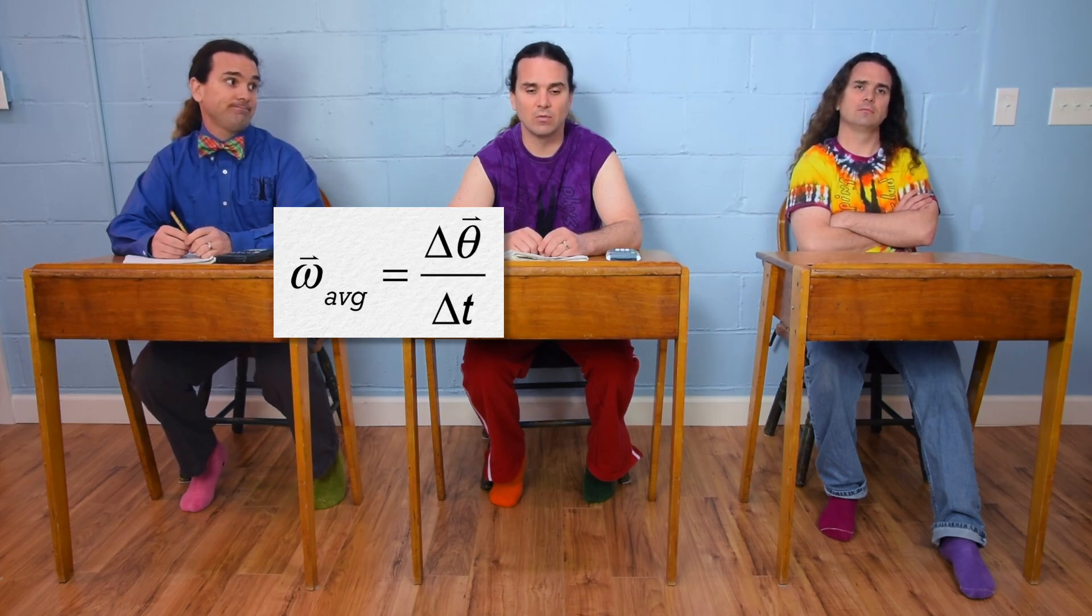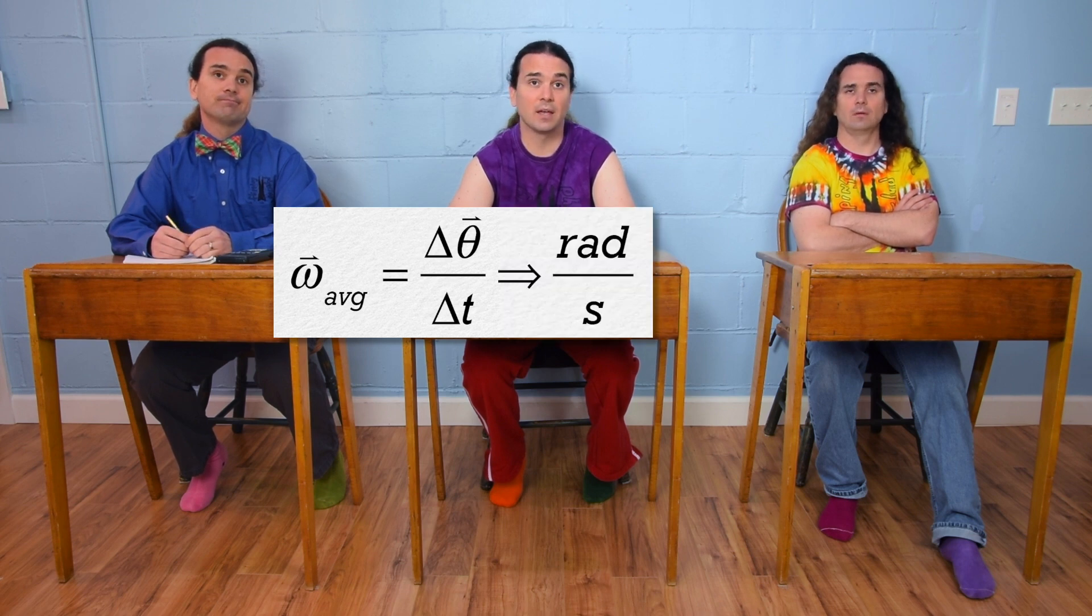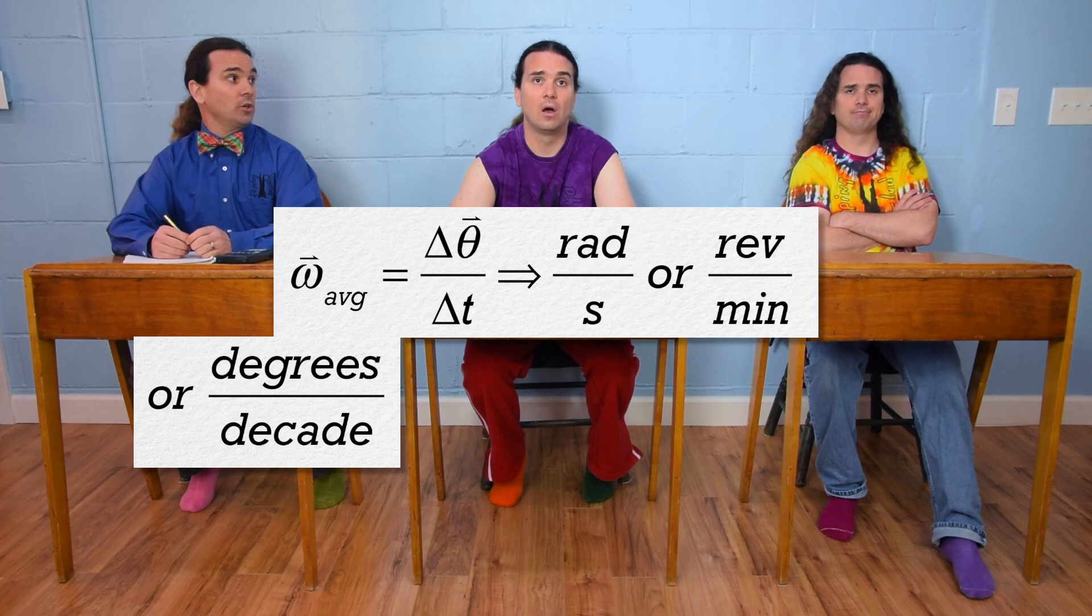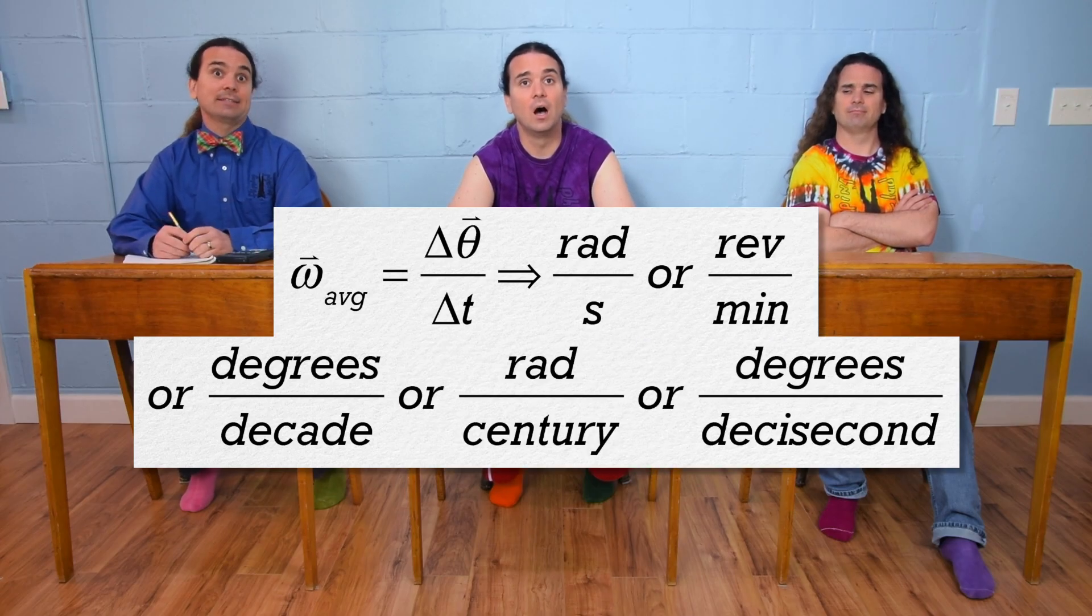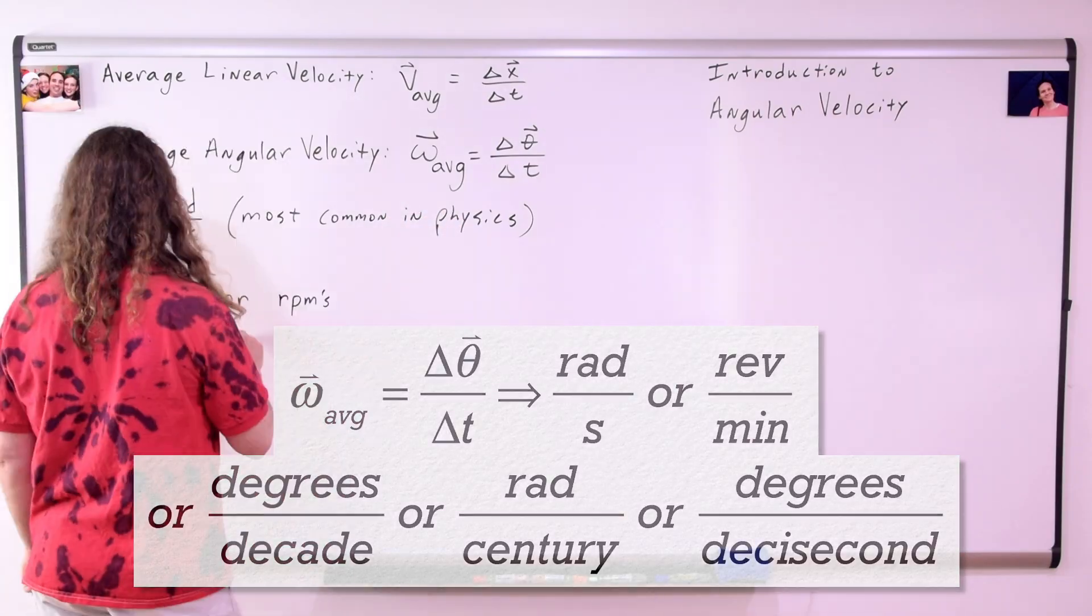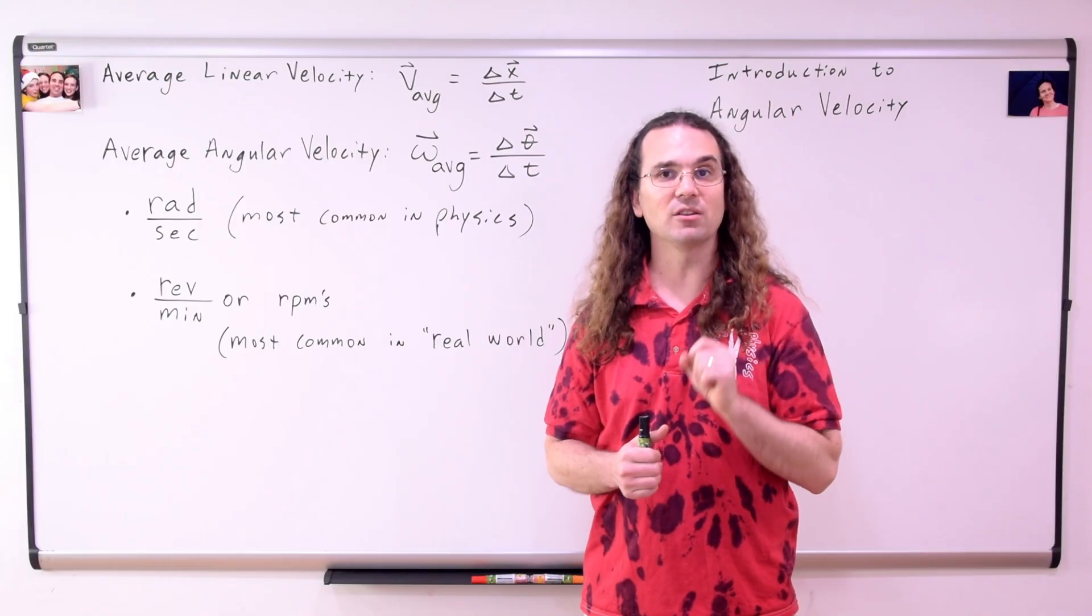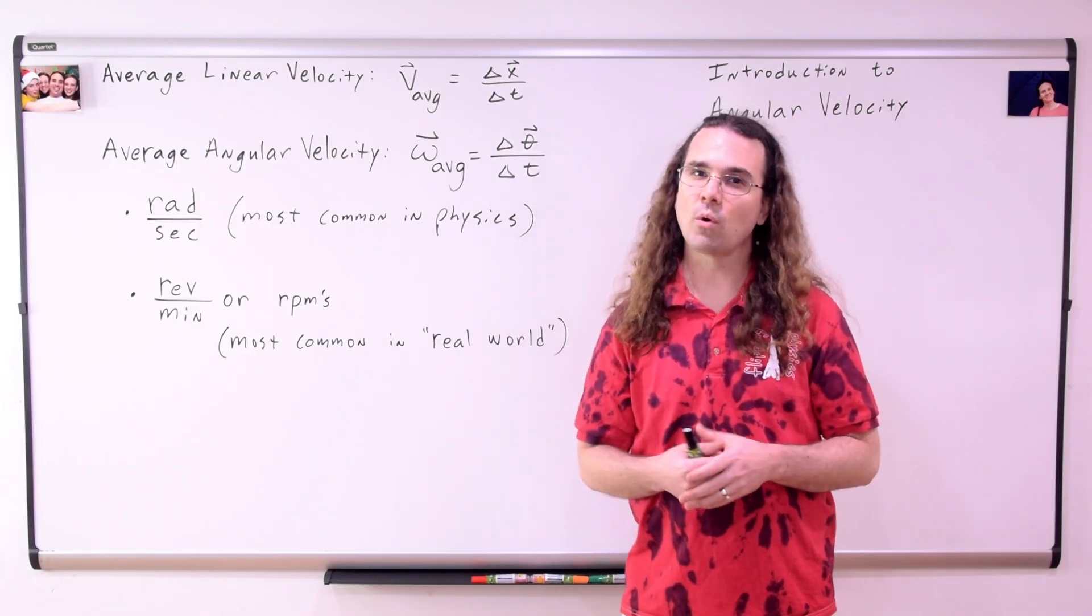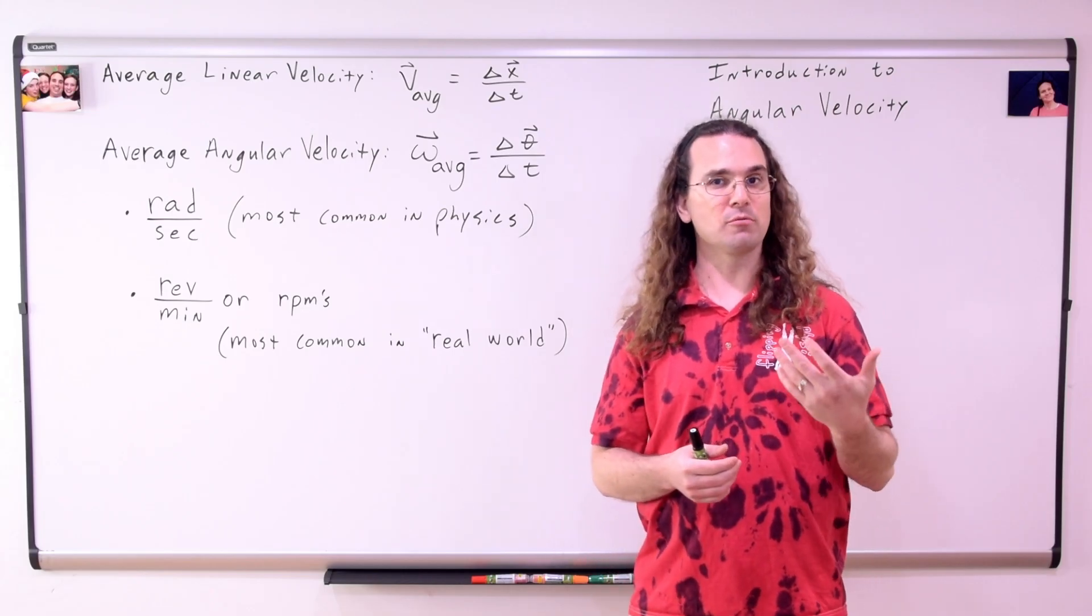Angular displacement over change in time. So radians per second. Revolutions per minute. Degrees per decade. Radians per century. Degrees per decisecond. That's right. There are all sorts of possibilities for the units for angular velocity. The two we will work with most often are radians per second and revolutions per minute.